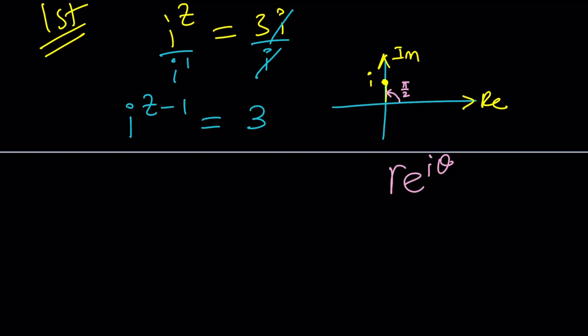So i can be written as e to the power i times pi over 2. But instead of just writing or using pi over 2 as the argument, because I can add multiples of 2 pi to this, like keep rotating, I just want to add multiples of 2 pi as 2 pi n. n is an integer. Let me say that before I forget.